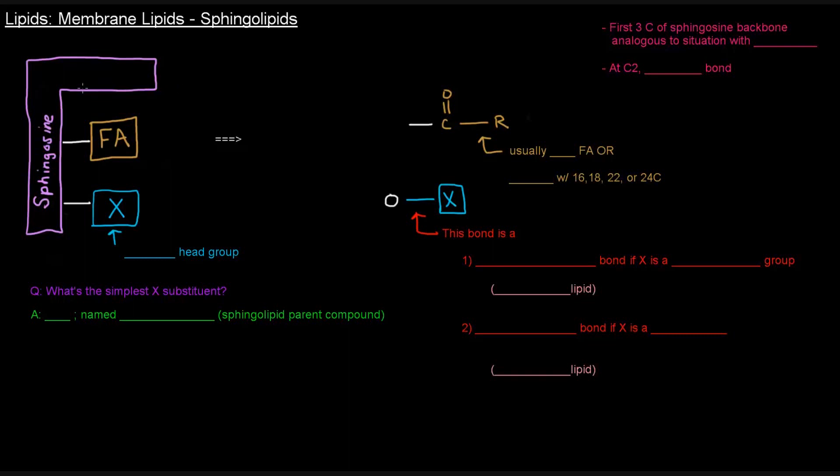So here I've done a different general structure of a sphingolipid. It still has a sphingosine backbone, it still has the one fatty acid attached, but instead of putting a phosphate and an alcohol or a carbohydrate portion, I know that that is either way the polar head group. So I've just written it here as X.